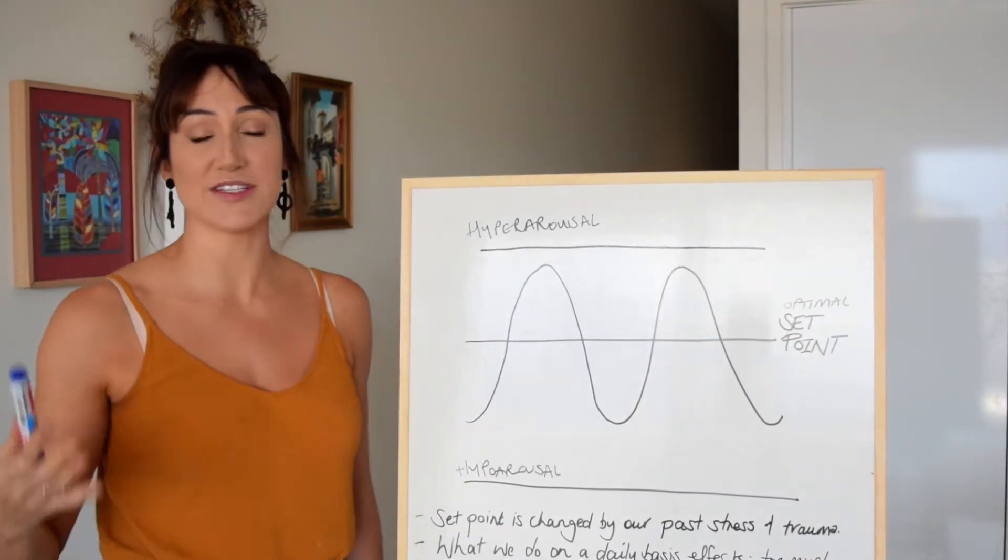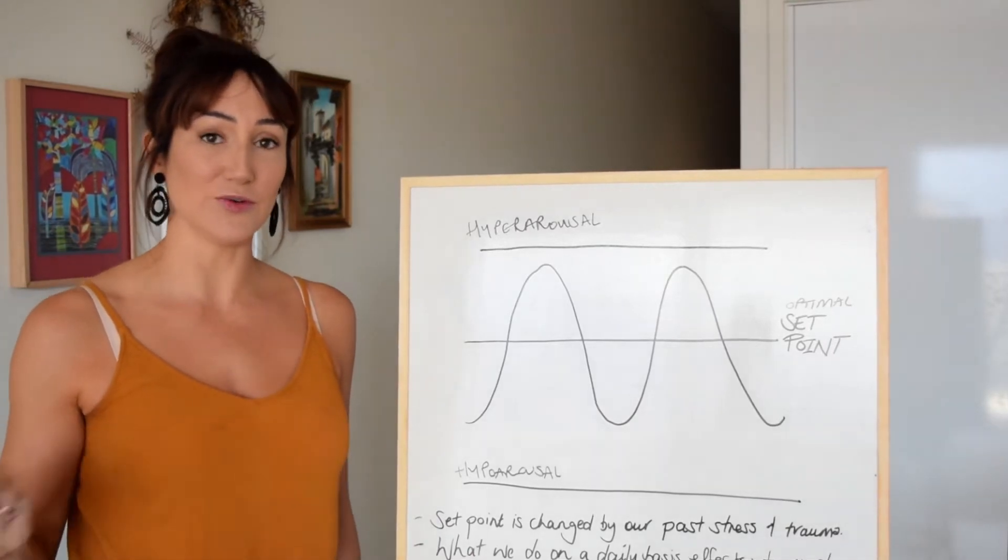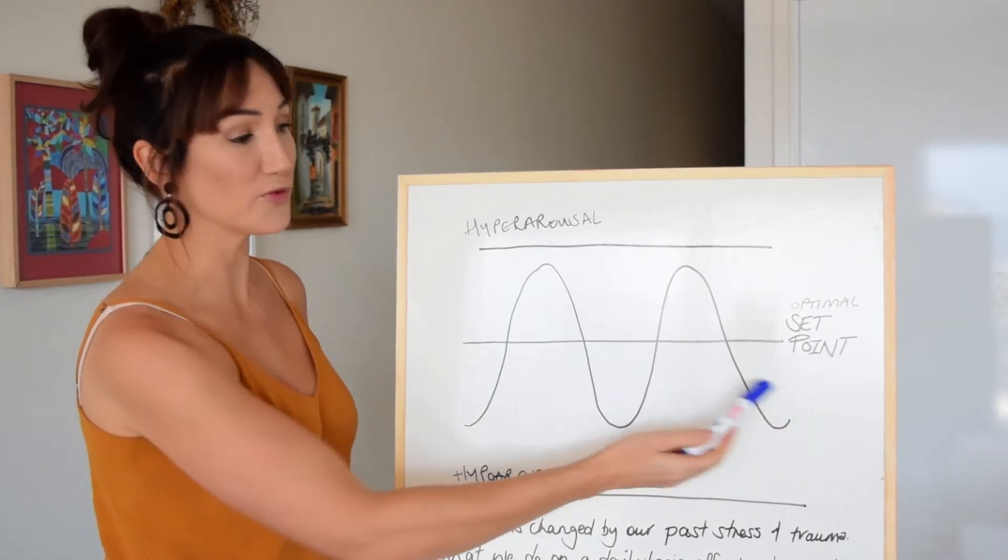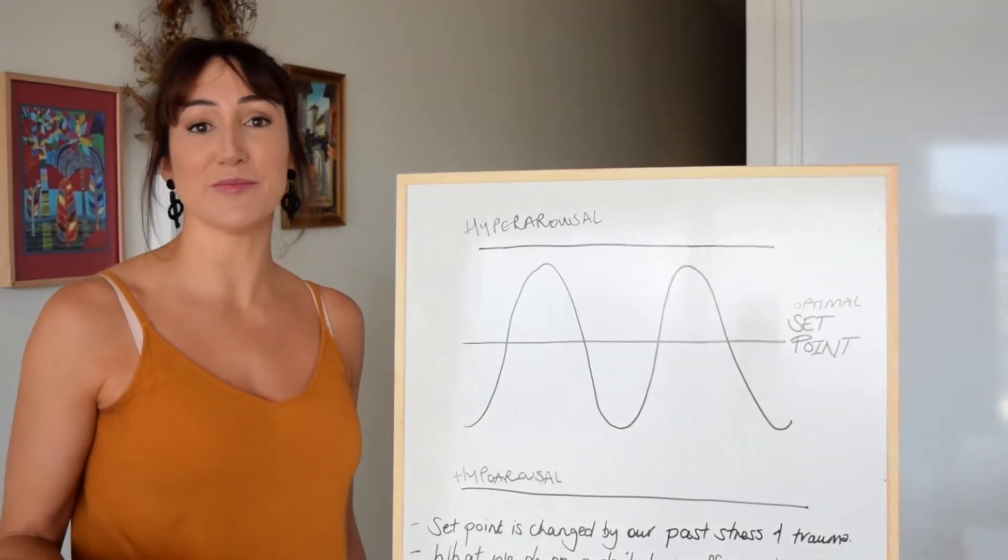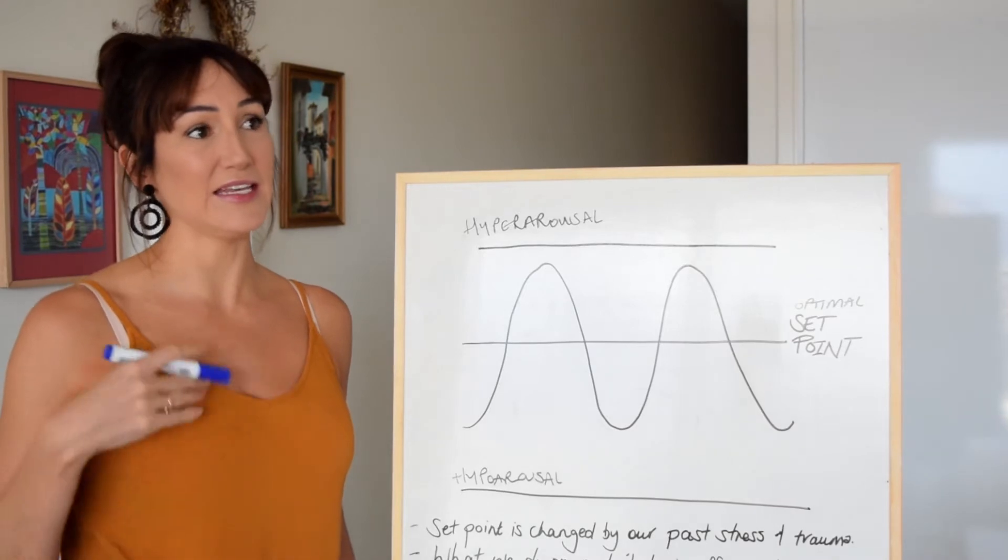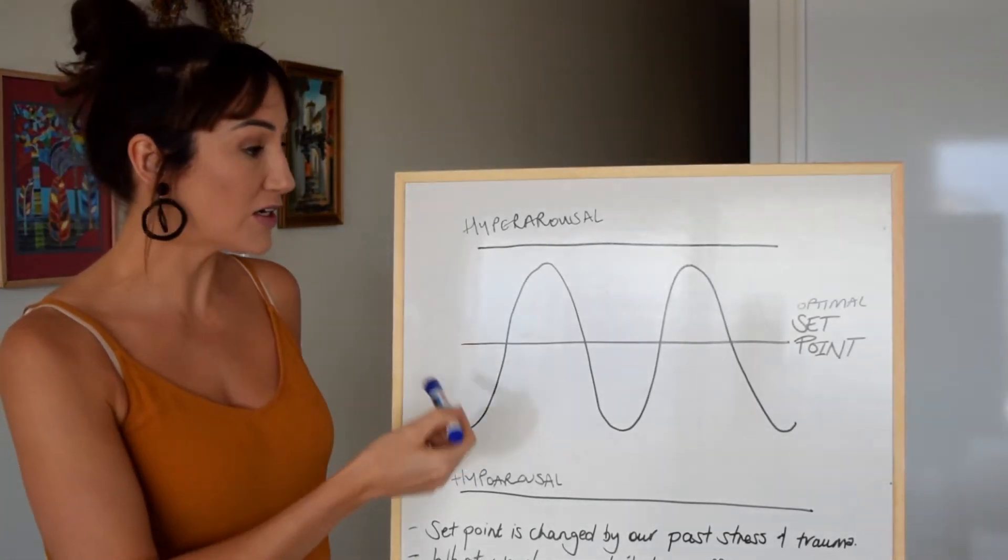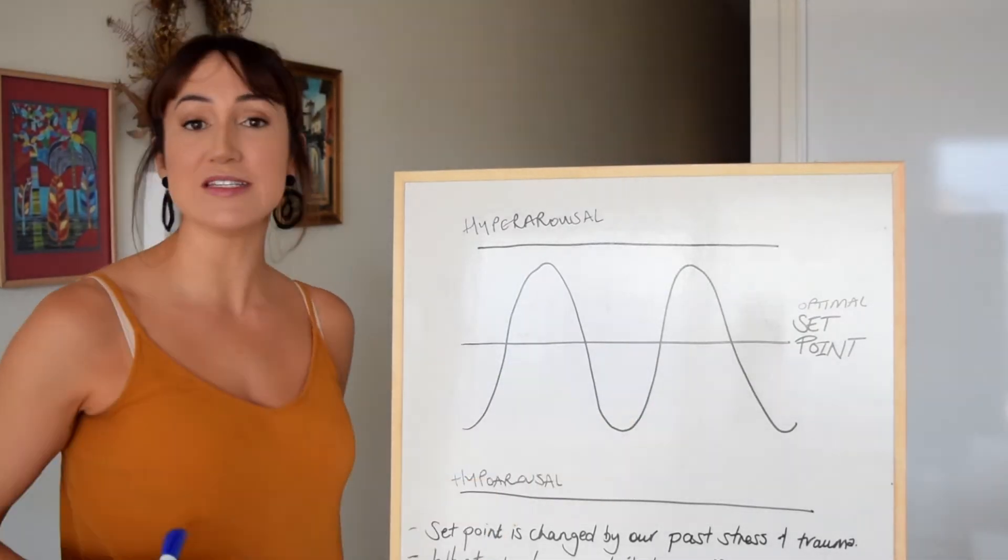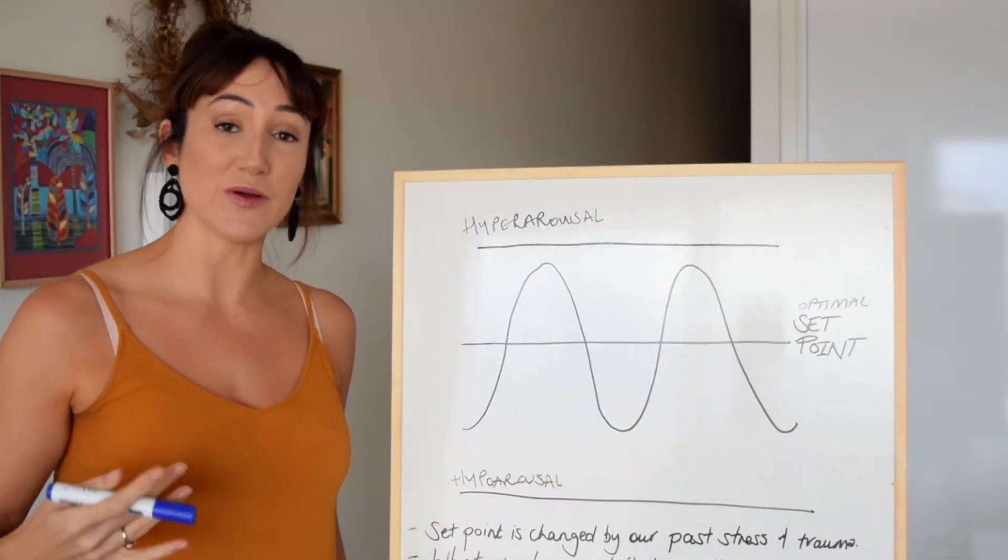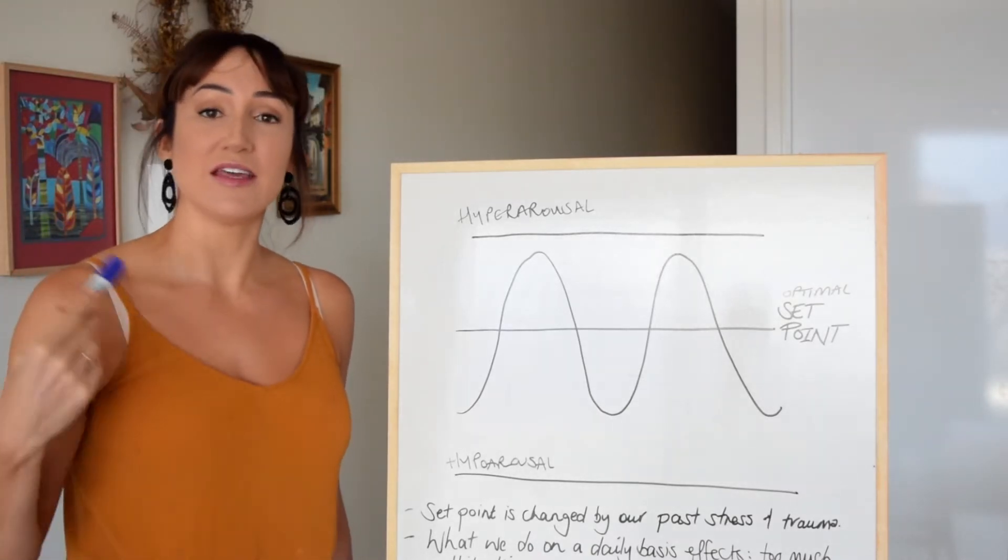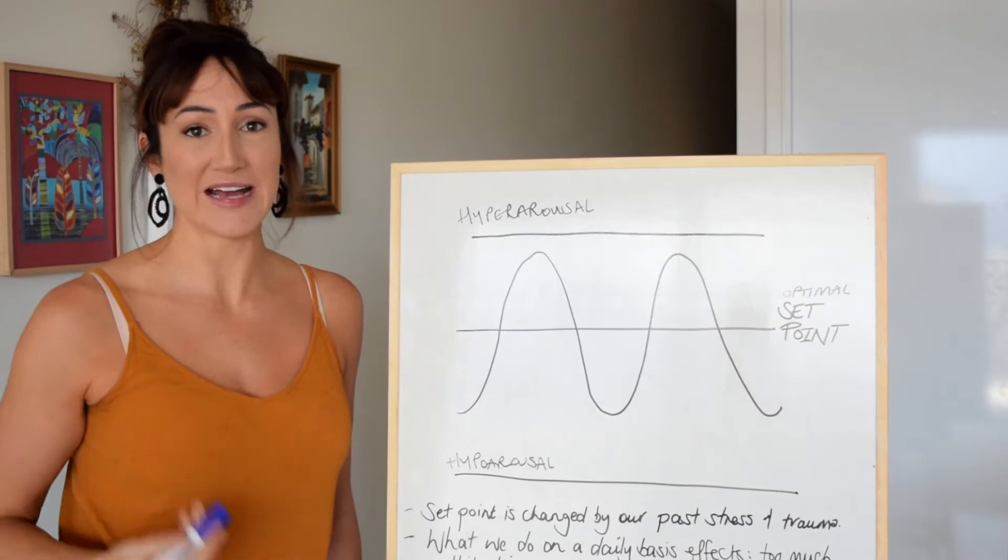Just like a temperature set point, you can consider your autonomic nervous system in the same way. Let's say we have an optimal set point, which is like the optimal temperature of a house where we feel the most comfortable. It's the same with the nervous system—this is the optimal set point where our physiology, our mind, our thoughts, and our emotions are functioning optimally.